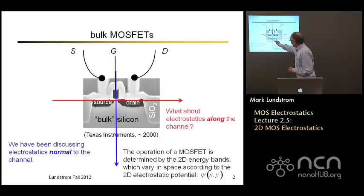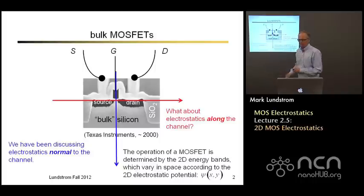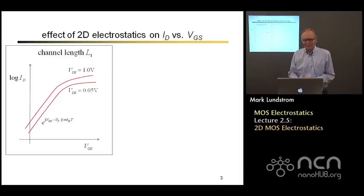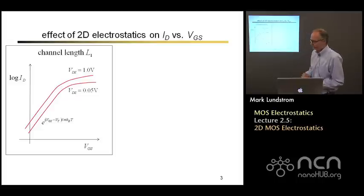We'll be content with just understanding energy band diagrams at the top surface of this structure, y equals zero, from the source across the channel and out the drain. Now the effect of two dimensional electrostatics, when we understand this, it will help us understand the I-V characteristics that we discussed way back in the first lecture.